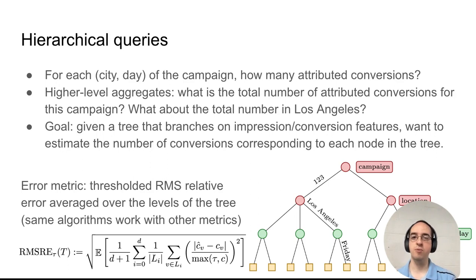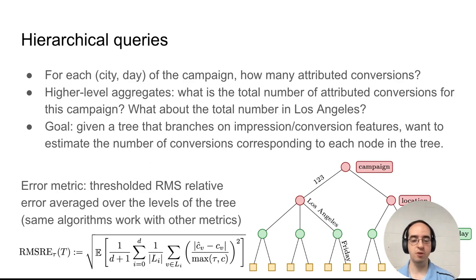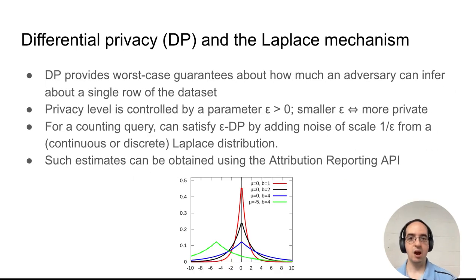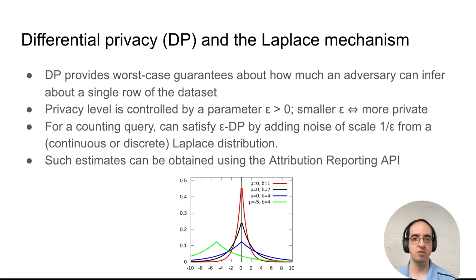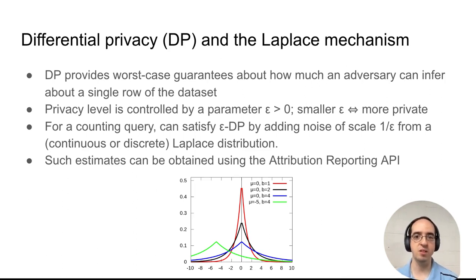The error metric we study is a thresholded version of root-mean-squared relative error, averaged over all the levels of the tree, but the algorithms we present work just as well with a variety of other error metrics. Our algorithms satisfy differential privacy, which provides worst-case guarantees about how much an adversary can infer about any individual data record. The privacy level is controlled by a parameter epsilon, where smaller epsilon corresponds to a higher level of privacy.